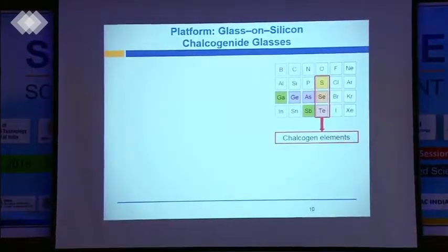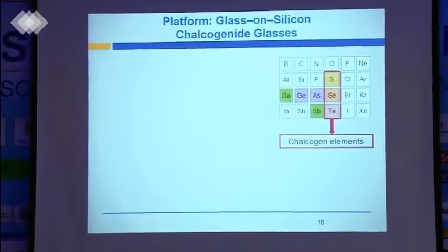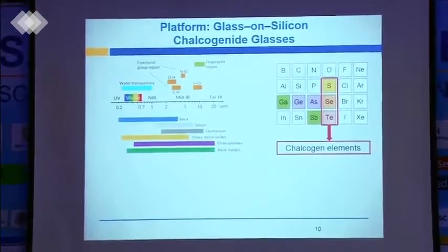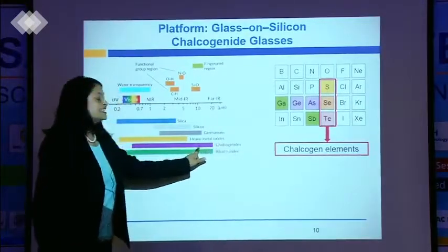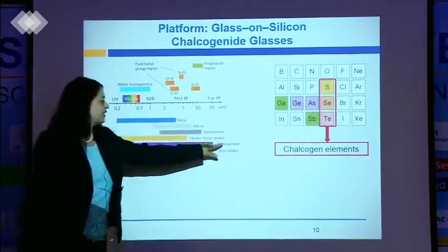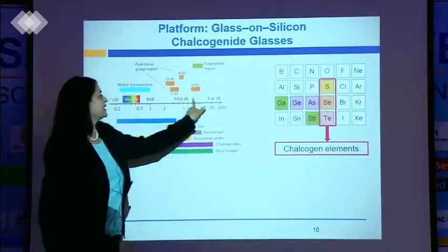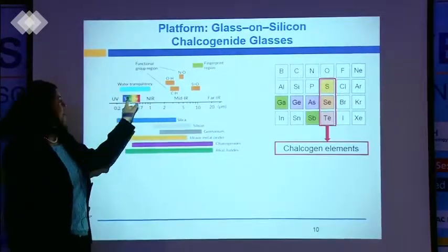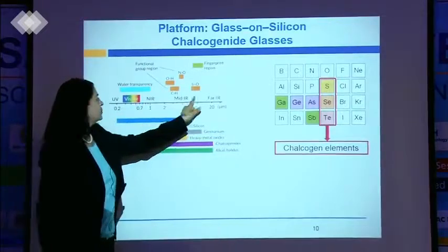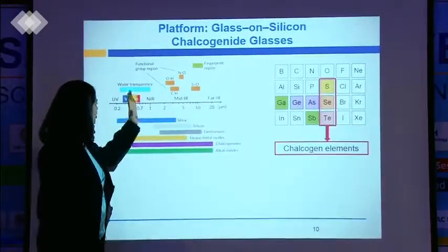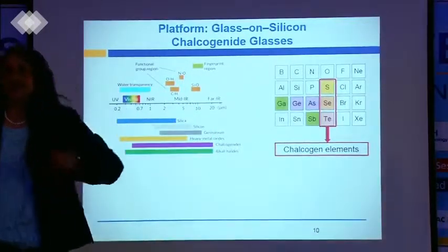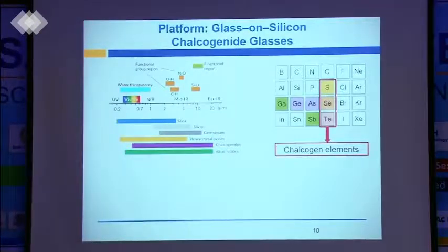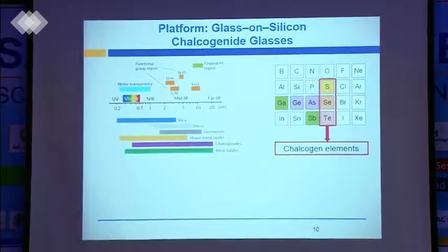The reasons we use these glasses are many-fold. The first reason: if you look at the purple line here, it shows the transparency of these chalcogenide glasses all the way across the electromagnetic spectrum — from ultraviolet, visible, near IR, mid IR, far IR. You can see that this is transparent all the way from visible to about far IR. That's what I'm looking for — a waveguide which is transparent in infrared.